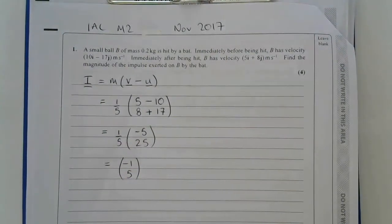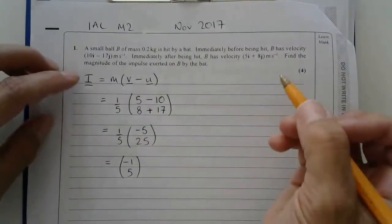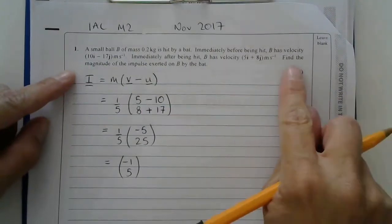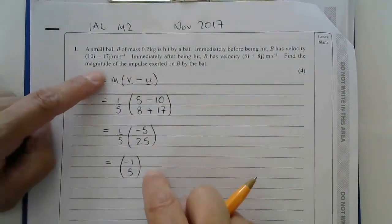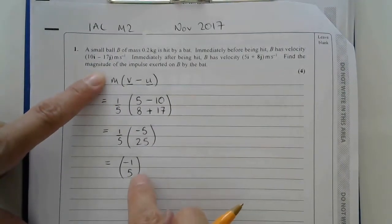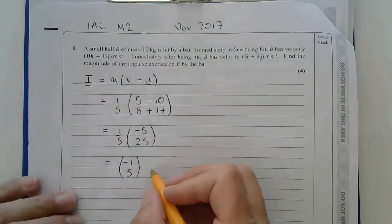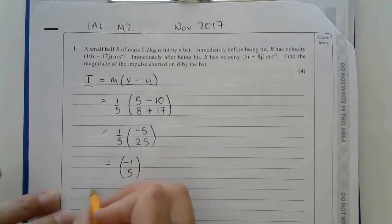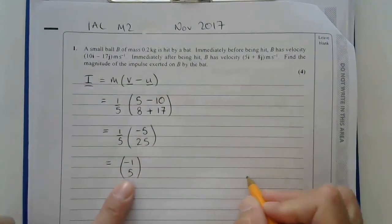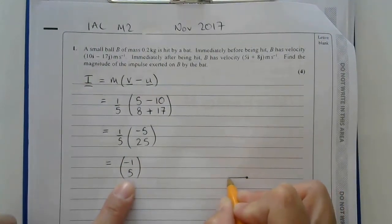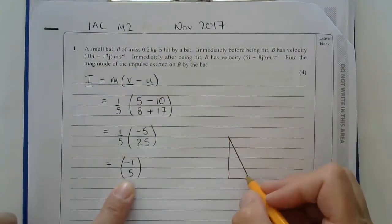Whenever you think you might have finished, you need to stop and read the question again and see if you've done what they asked. So find the magnitude of the impulse. Now this is the impulse, but the magnitude of the impulse is basically the length of this vector. So we need to apply Pythagoras to this because this vector would go 1 in that direction and 5 in this direction. Just drawing a little sketch for myself.